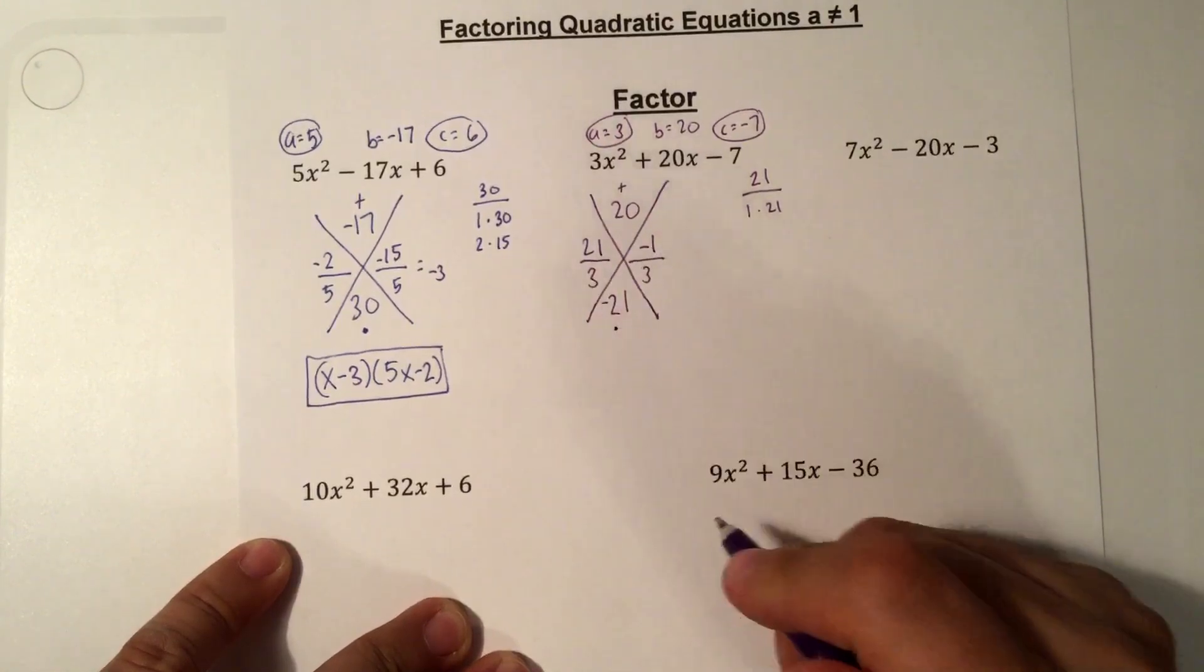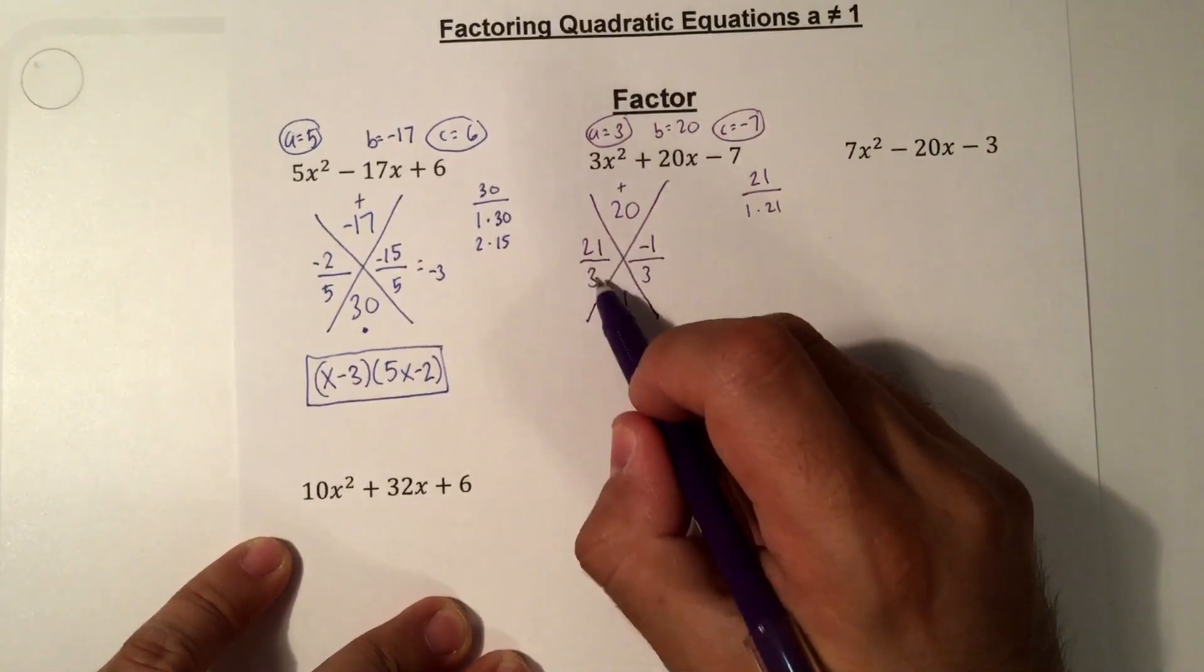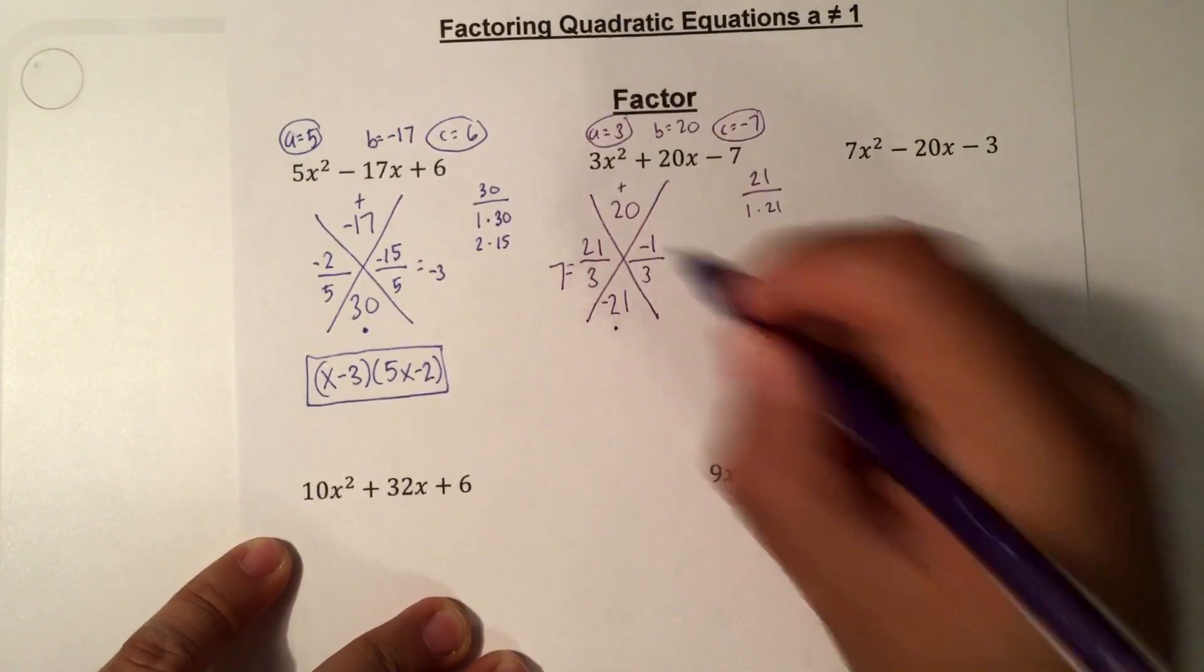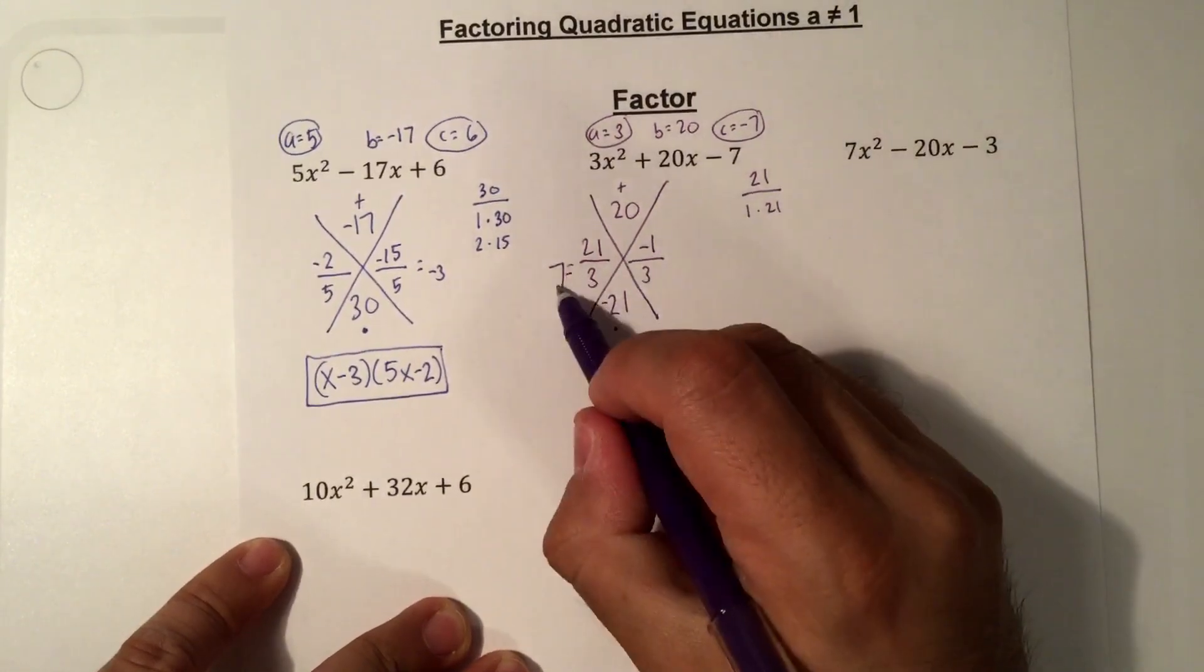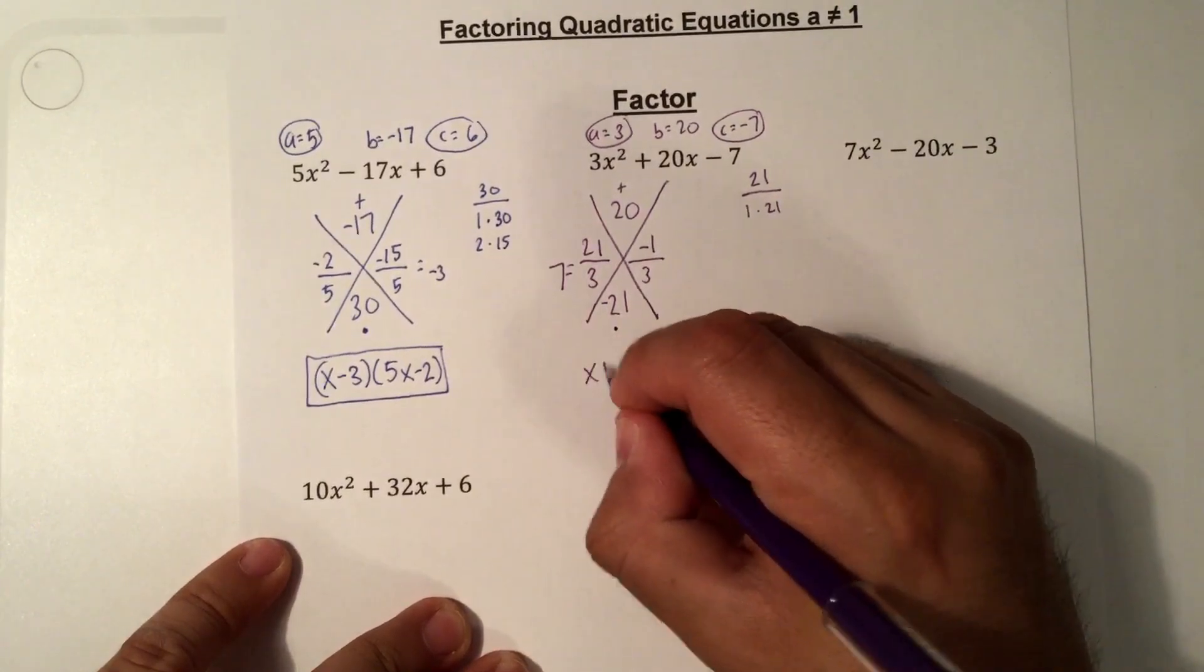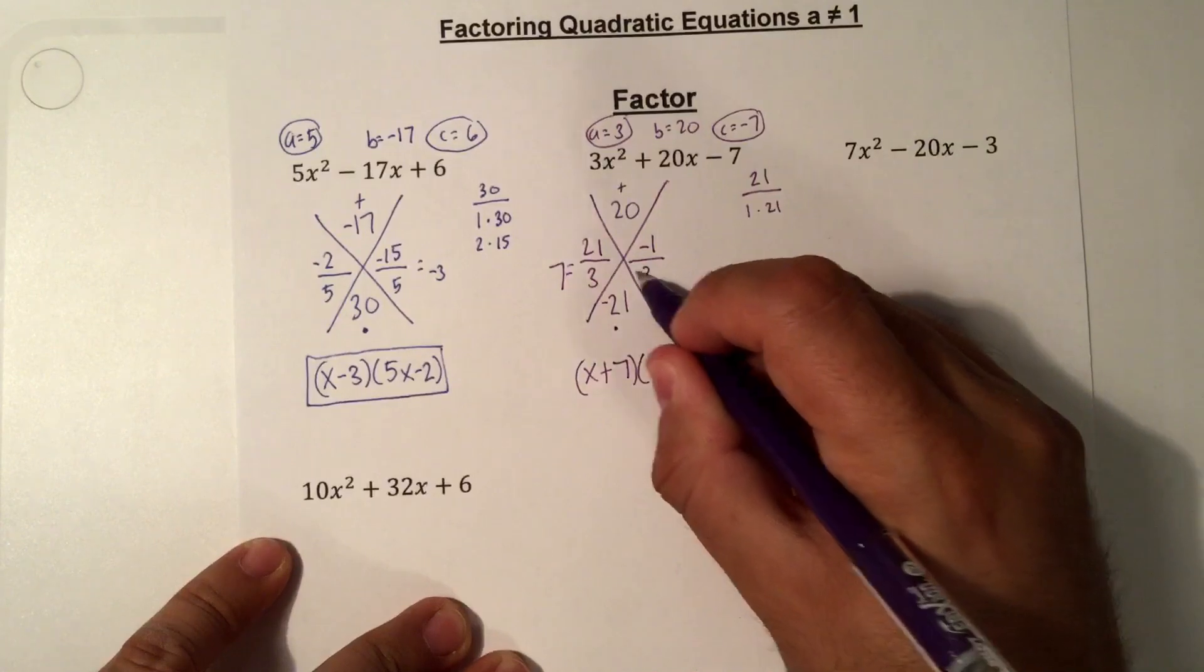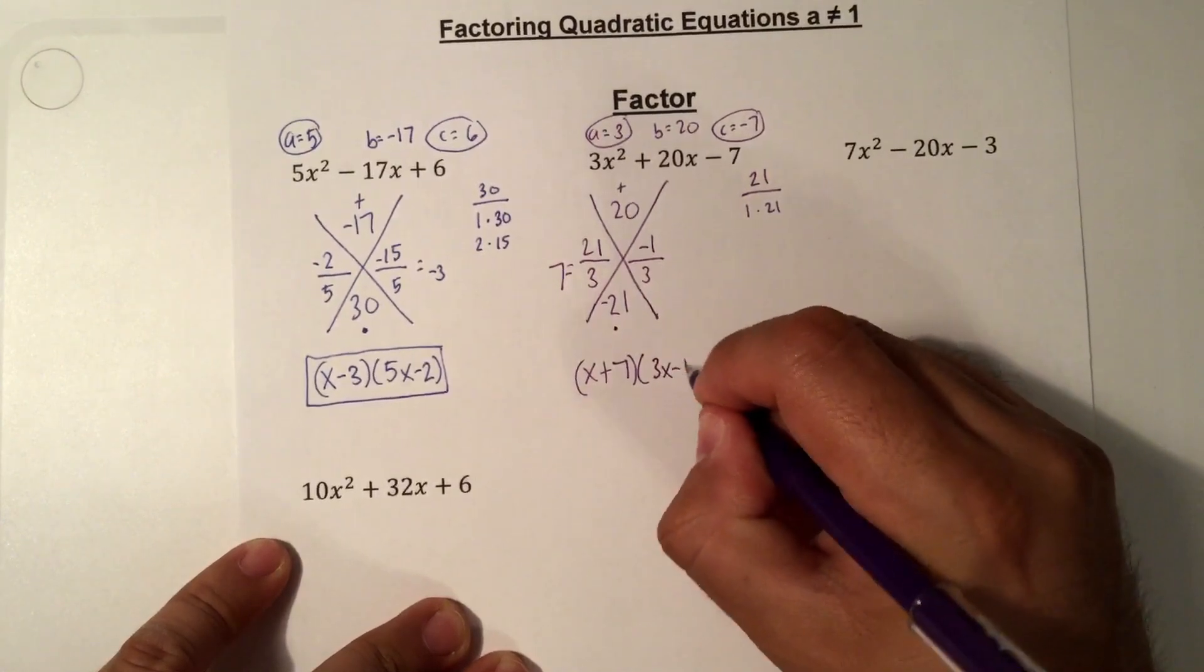When you multiply it, it is negative 21. So now we reduce. 21 divided by 3 is positive 7. And negative 1 third does not reduce. 3 cannot go into negative 1. Since this is positive 7, that's going to be x plus 7. And for the second one, 3 we swing it in front of the x. So 3x minus 1.